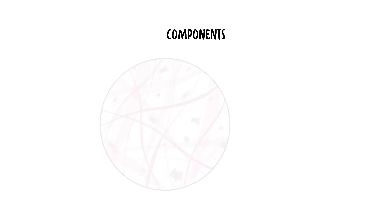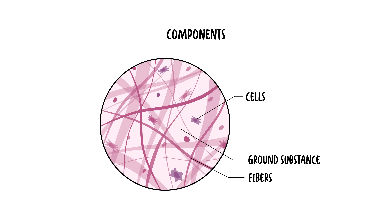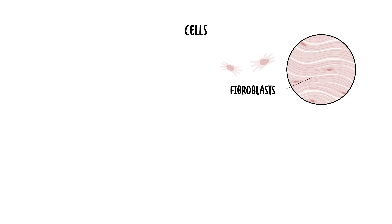So let's look at the components of what make up a connective tissue. Connective tissue comprises three key elements: the cells, ground substance, and fibers, all of which form the extracellular matrix. The cells themselves are the fibroblasts, which are the main cells, and they are responsible for generating and sustaining the extracellular matrix.